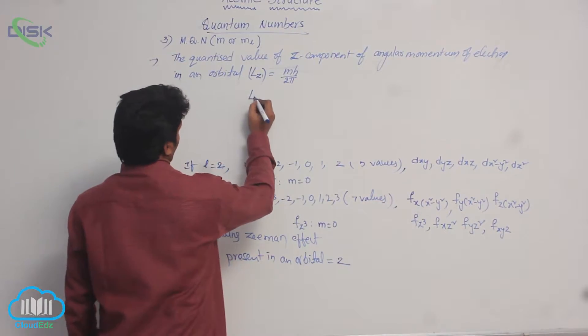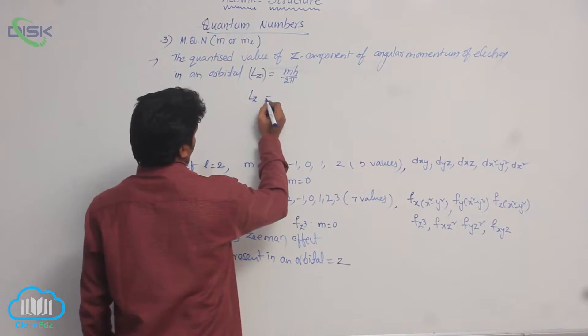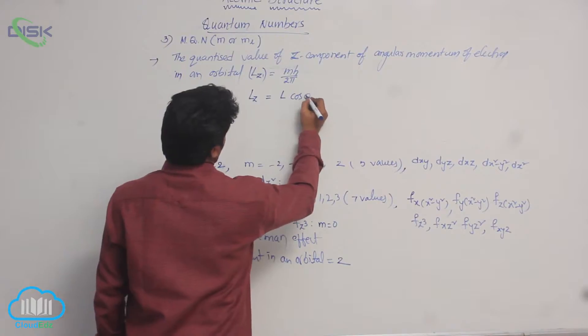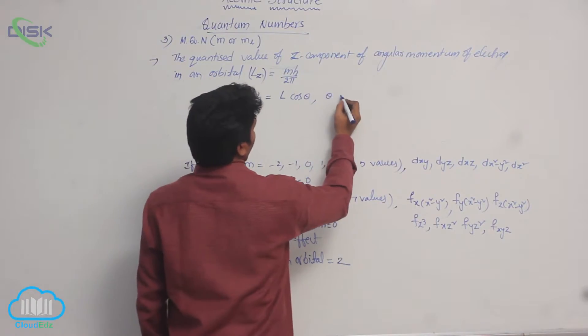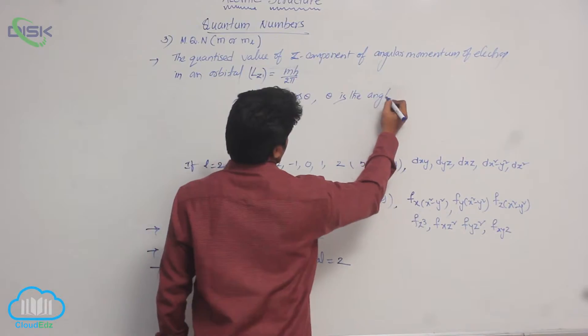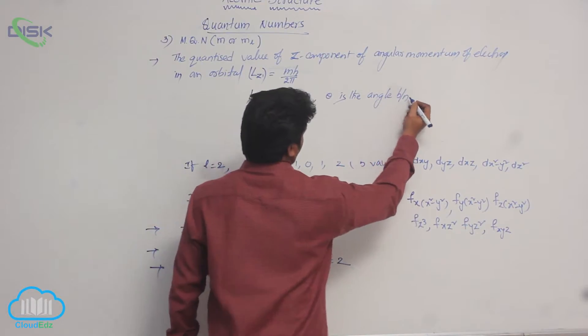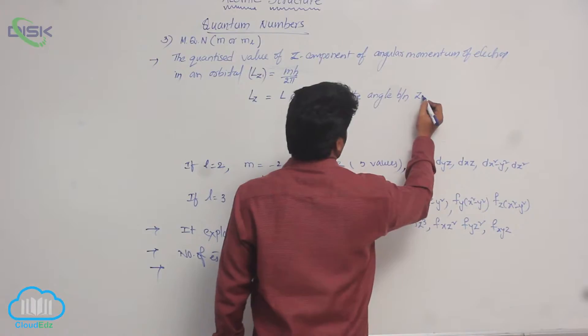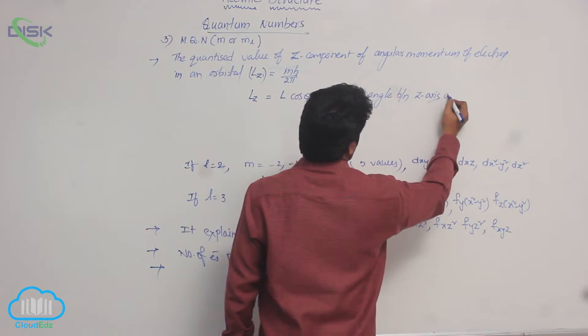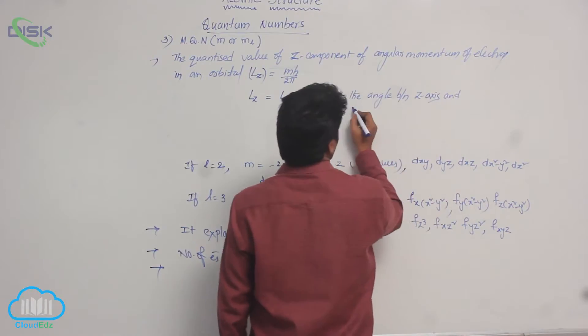But you know, there is another formula for Lz. What is that? L cos theta, where theta is the angle between z axis and angular momentum vector.